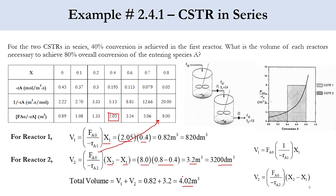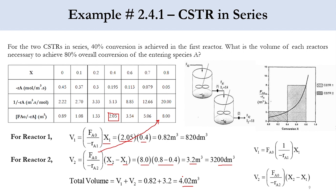Recall from the previous lecture that a single CSTR for the same 0–80% conversion had a volume of 6.4 m³. By dividing into two CSTRs, the total volume is reduced to 4.02 m³. If you further divide into more CSTRs, the volume will decrease further.